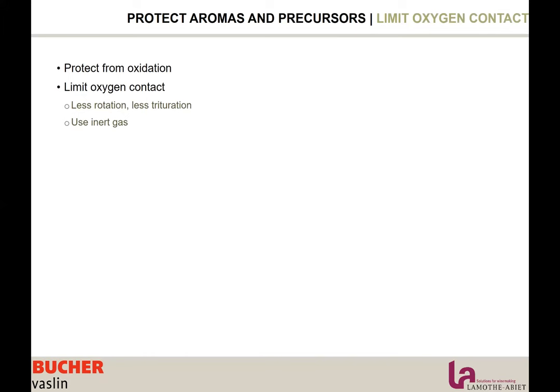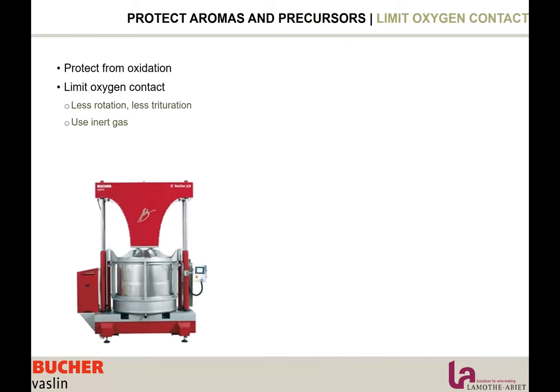To protect against oxidation during pressing, there are two approaches. You can limit rotation and trituration by using vertical pressing. With vertical pressing, you will have a lower juice yield, but the skins are compact, you go higher in pressure, you extract more aromatic compounds, and you avoid rotation, skin breakage, and oxygen contact. So vertical pressing is a very good strategy to get more aromatic compounds and protect them from oxidation.